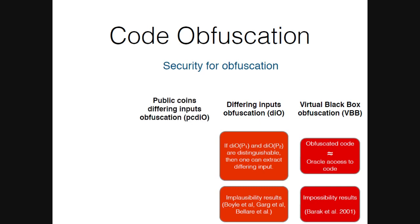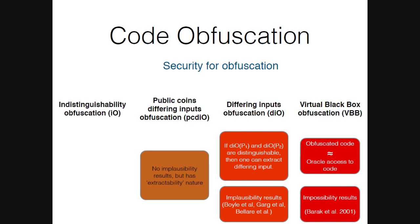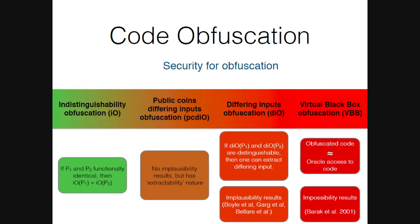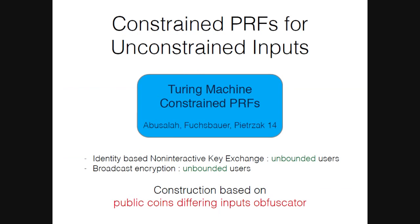A weaker notion that evades these implausibility results is public-coins differing-input obfuscation — it also involves extractability-type assumptions. Finally, the weakest is indistinguishability obfuscation (IO), which guarantees that if two programs p1 and p2 are functionally identical, then their obfuscations are computationally indistinguishable. Going back to Abusala et al., their construction is based on public-coins differing-input obfuscation, so a natural question is whether we can construct constrained PRFs for Turing machines directly using IO.